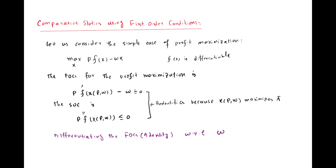We were discussing the properties of the factor demand and output supply function of a profit maximizing firm. We already discussed the first property — that the factor demand function is homogeneous of degree zero — in the previous video. In this lecture, we are going to discuss the comparative statics of a profit maximizing firm, taking a single output. We will see what happens when the prices of factor inputs change, and this analysis will help us identify more properties of the factor demand and supply function.